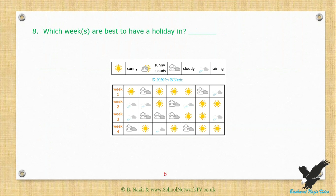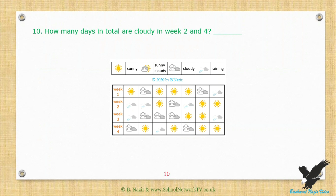Which week is best to have a holiday in? How many days in total are sunny in week 1 and 2? How many days in total are cloudy in week 2 and 4? Which two weeks had the same number of days of sun?